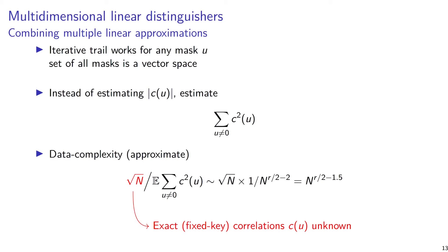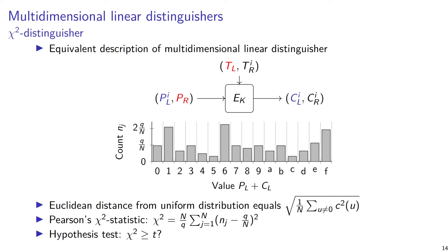The square root of N factor arises because we don't know the actual fixed-key correlations. An equivalent way to describe this distinguisher — because the masks form a vector space — is the chi-square distinguisher.